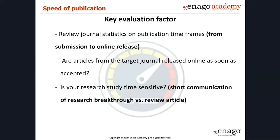Speed of publication: some journals present turnaround times from submission to acceptance, some don't. Speed of review might be important to you. The peer review process is notoriously inconsistent — sometimes you can get two or three really constructive reviews back within a month and be published within a matter of months. Other times it can genuinely take over a year to go through the whole peer review process. When it comes to peer review, be prepared for anything.